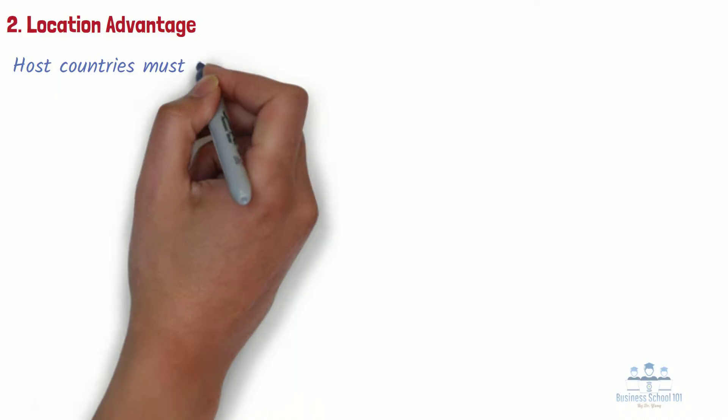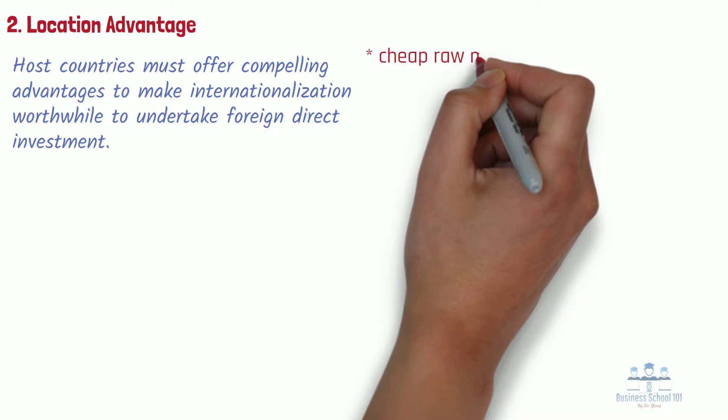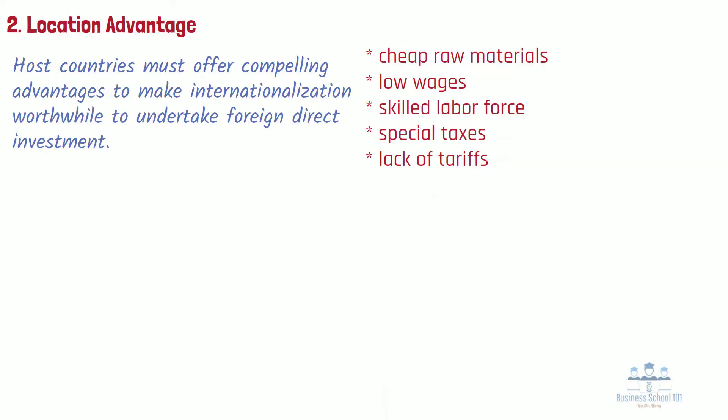Section 2: Location Advantage. Considering the liability of foreignness, host countries must offer compelling advantages to make internationalization worthwhile to undertake foreign direct investment. These advantages can be simply geographical or exist because of cheap raw materials, low wages, skilled labor force, special taxes, lack of tariffs, etc. Companies should assess whether there is a comparative advantage to performing specific functions within a particular nation. Often, these considerations depend on resources costs and availability.